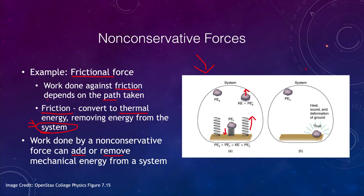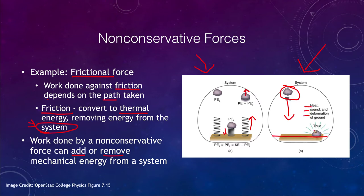In a non-conservative system on the right-hand side, the object falls and smacks into the table. It had potential energy, but if we define the table as the zero point of potential energy then it has no potential energy anymore. It's not moving so it has no kinetic energy either — the energy went into heat, sound, and perhaps deforming the ground. Energy is still conserved; it is just removed from the system and dissipates outward.